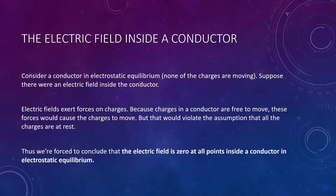Think about what that would mean. Electric fields exert forces on charges — they move them around and push on them. Because charges in a conductor are free to move (it's a metal, and charges can freely flow through metals), these forces would cause the charges to actually move and shift around. But that violates what we just said: the charges are in a state of equilibrium — they don't move.